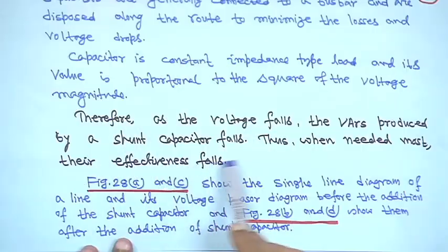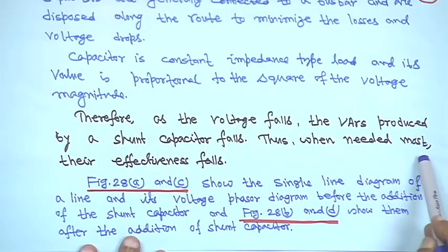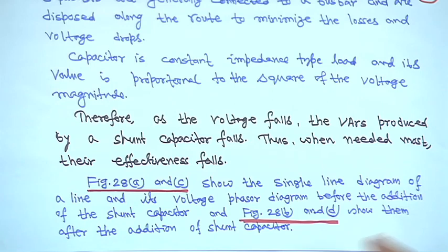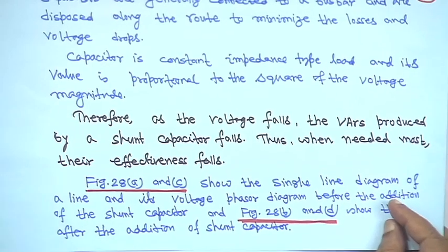As the voltage falls, the VARs produced by the shunt capacitor fall — thus, when reactive support is needed most, the effectiveness of the shunt capacitor actually falls.